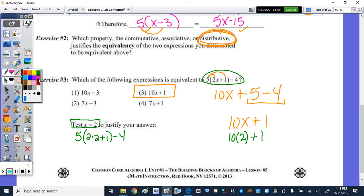So please excuse my dear Aunt Sally. Parentheses. So we have 2 times 2 plus 1. Well within that we have to multiply first. So we get 4 plus 1. So this ends up being 5 times 5 minus 4. 25 is 5 times 5 minus 4 is 21.